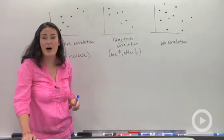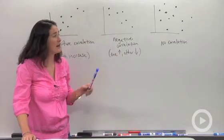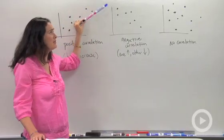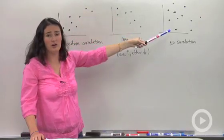Anyway, correlation has to do with how two variables are related to each other. Think of slope. It might be positive, negative, or no correlation at all.